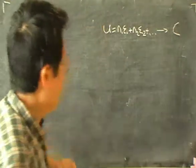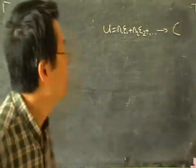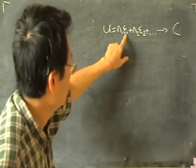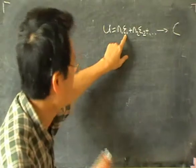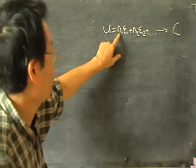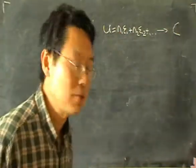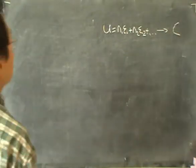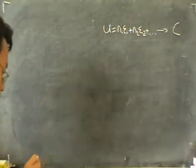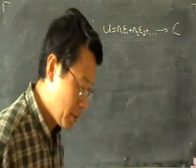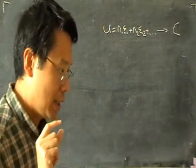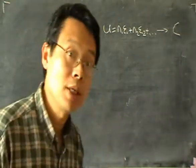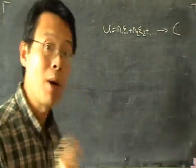In order to find this total energy, we must first find the energy levels and the number of particles in each level. So let's start with the energy levels. The energy levels of an ideal gas are obtained by solving Schrödinger's equation for a particle in a box.